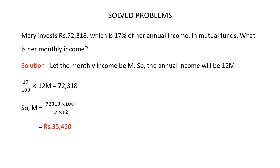It is given that Mary invests Rs.72,318, which is 17% of her annual income. So 17% of her annual income equals 72,318. This means 17/100 × 12M = 72,318. On cross multiplication, M = 72,318 × 100 / (17 × 12). On solving, M = 35,450. So Mary's monthly income is Rs.35,450.